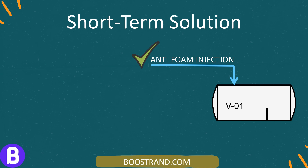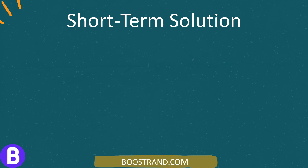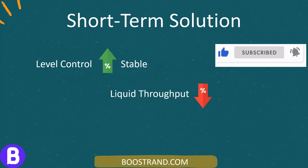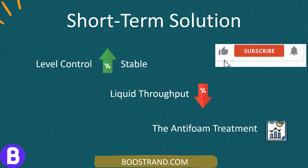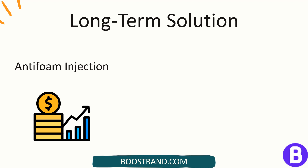Over the following weeks, the team fine-tuned the dosage and injection points of the anti-foam agent to optimize its effectiveness while managing operational costs. It was noticed that the level control in the separator was more stable, and the liquid throughput to the compressor suction scrubber was significantly reduced, illustrating the efficacy of the anti-foam treatment. However, it cost a lot — a continuous daily burden with a rental injection system in addition to the cost of the anti-foam itself.